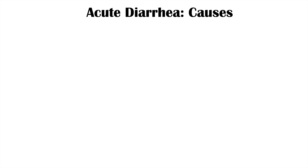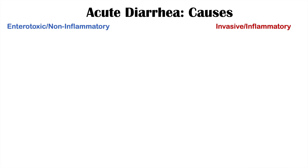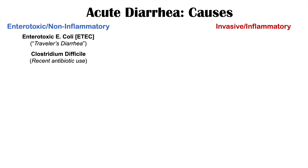Now, what are the actual causes of acute diarrhea within these two broad categories? With regards to enterotoxic or non-inflammatory acute diarrhea, one cause is enterotoxic E. coli, or ETEC — easy to remember because it shares the same word. ETEC is the most common cause of traveler's diarrhea and is often seen in individuals who have traveled to third world countries or developing nations. Another cause is Clostridium difficile, which is associated with recent antibiotic use, especially antibiotics like clindamycin.